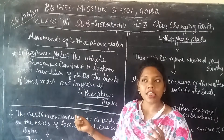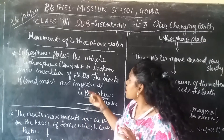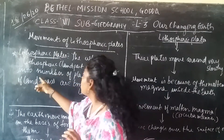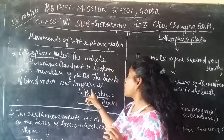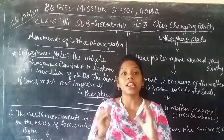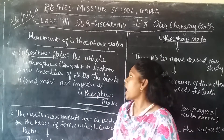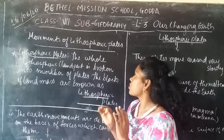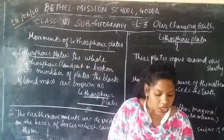Have you seen ice slabs? Same as that, the whole land mass of the earth's crust is broken into a number of plates. This land mass is known as the lithospheric plate. The lithospheric plate is broken down into a smaller number of pieces.